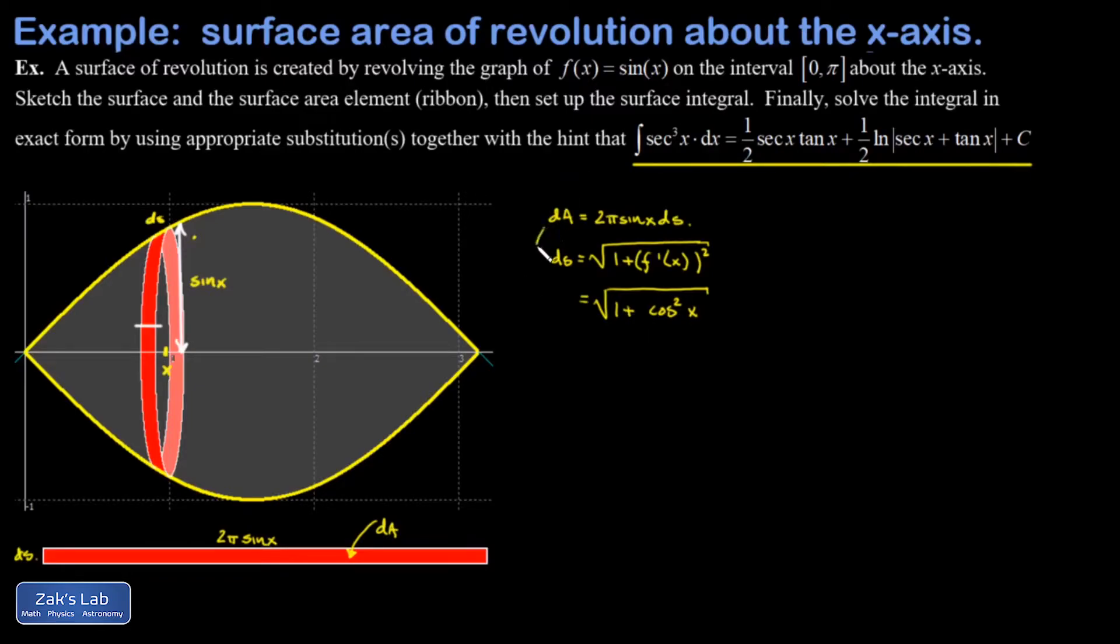Now I can plug this back into the formula for dA, and I've got 2 pi sine x times the square root of 1 plus cosine squared x. Since everything is phrased in terms of x now, we're ready to set this up as an integral. We say that the total surface area is the sum of all the contributions. That's what an integral does. It just adds up these continuously changing infinitesimal contributions. And I phrased it entirely in terms of x now, so I can put in my x limits of integration. That's 0 to pi. 2 pi sine x, square root 1 plus cosine squared x dx.